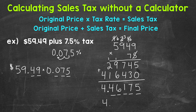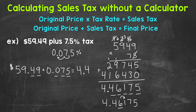Let me rewrite our final answer here without those lines underneath. Now we are working with money, so our final answer is going to go to the hundredths place. We need to round this decimal to the hundredths place. We have a 6 in the hundredths. We look at the digit to the right — we have a 1 — so that means we stay the same. Our answer is going to be $4.46. That's how much we are paying in sales tax — 7.5% of $59.49.